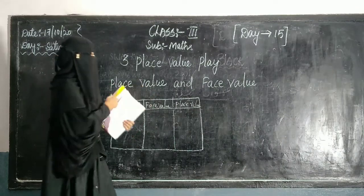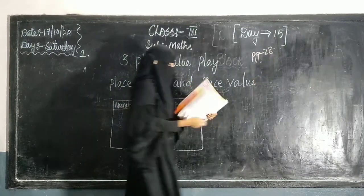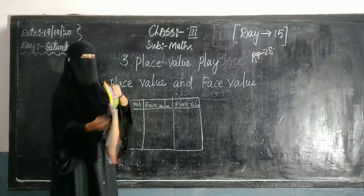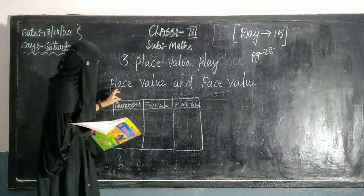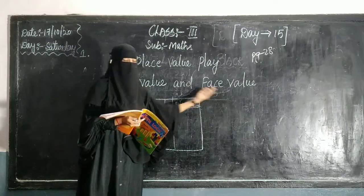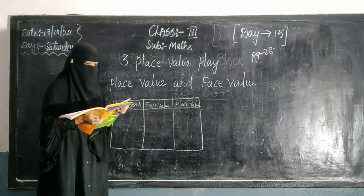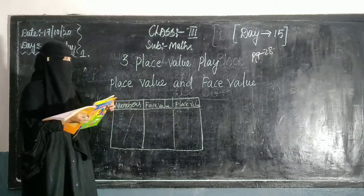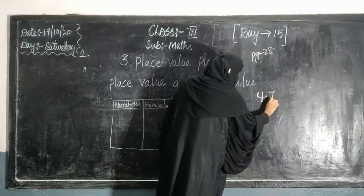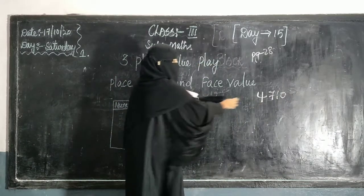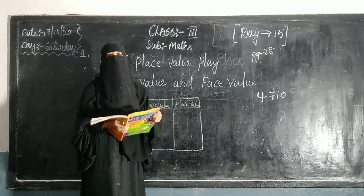Now take out page number 28. Listen carefully first. In this video, you are going to learn about what is place value and what is face value. So, place value — the value of a digit depends on its position. For example, look here: 4, 7, 1, 0. The position depends on the number.